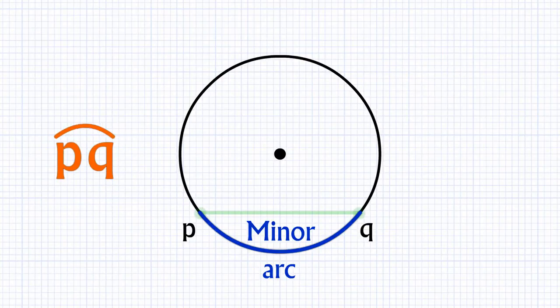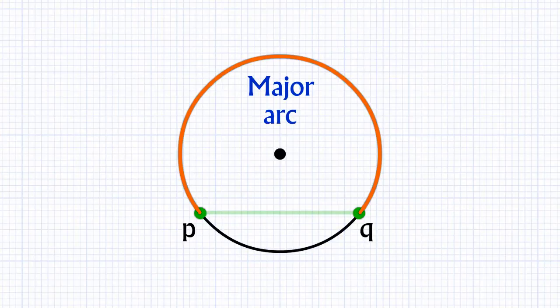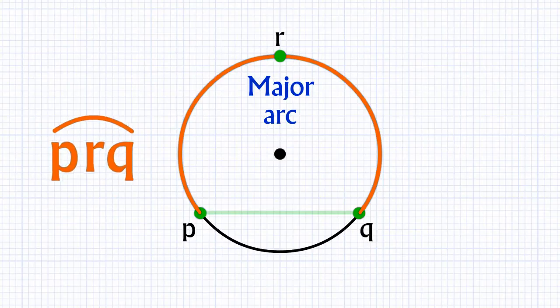For showing major arc, we need another point on the arc. Let's say this point, point R. Then, we can write major arc like this. This is major arc PQ.